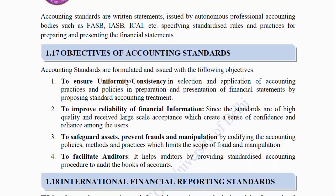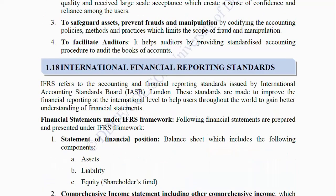Objectives of Accounting Standards: Accounting Standards are formulated and issued with the following objectives: (1) To ensure uniformity and consistency in selection and application of accounting practices and policies in preparation and presentation of financial statements by proposing standard accounting treatment. (2) To improve reliability of financial information, since accounting standards of high quality receive large-scale acceptance, creating confidence and reliance among users. (3) To safeguard assets and prevent frauds and manipulation by qualifying the accounting policies, methods and practices which limits the scope of fraud. (4) To facilitate auditors by providing standardized accounting procedures to audit the books of accounts.